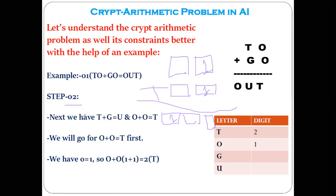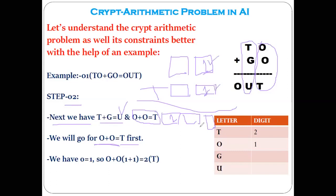Next we have: O plus O equals T, and T plus G equals U. Since we already know O equals 1, the solvable equation is O plus O equals T, that is 1 plus 1 equals 2. So we have the value of T as 2.